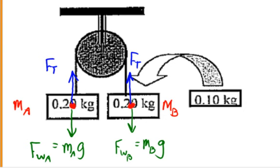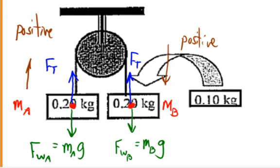Now, here's the next step. Which way is the system going to accelerate? Common sense should tell us that the system is going to accelerate in the direction of the object that has the heavier mass. The right-hand mass is going to descend — it's going to accelerate downward — whereas the lighter mass is going to accelerate upward as a result of this unbalanced force. Let me indicate that in both of the diagrams.